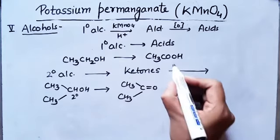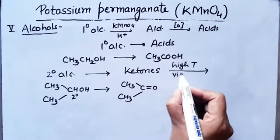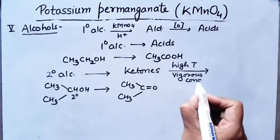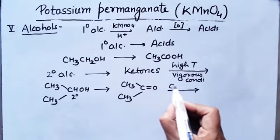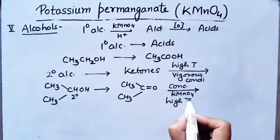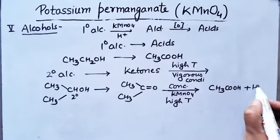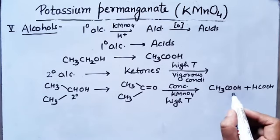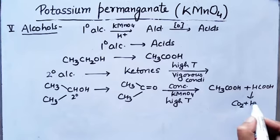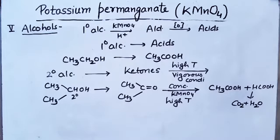But if these ketones are heated to a very elevated temperature — under vigorous conditions with very concentrated KMnO₄ at very high temperature — finally acids are formed. Bond cleavage occurs and you will get acetic acid and formic acid; formic acid further oxidizes to carbon dioxide and water.